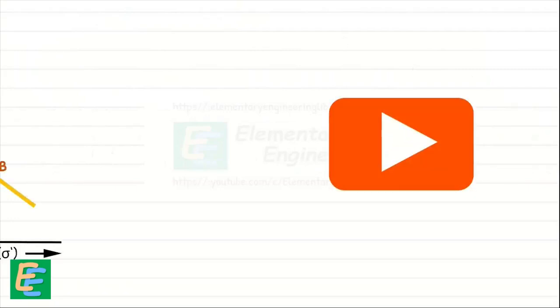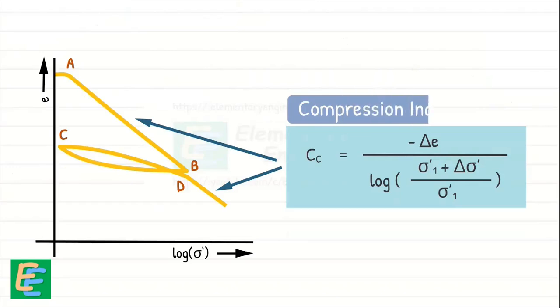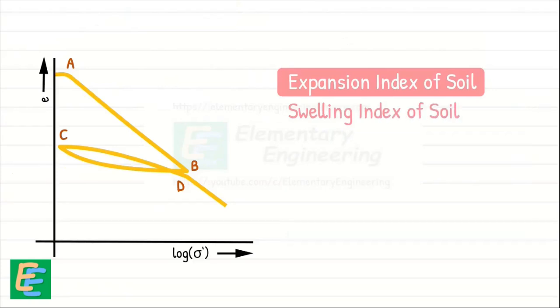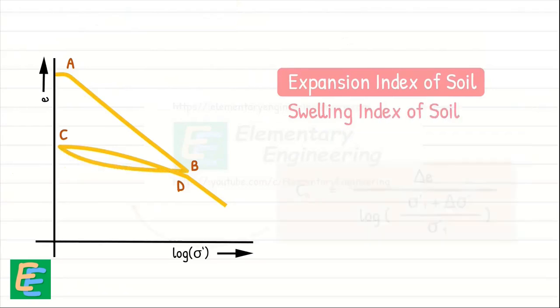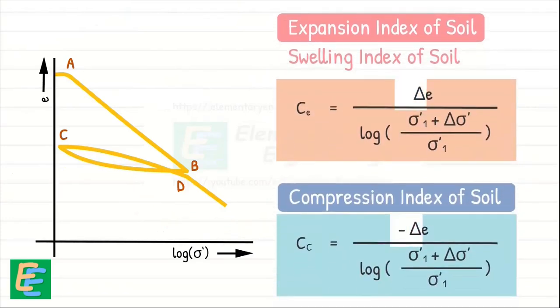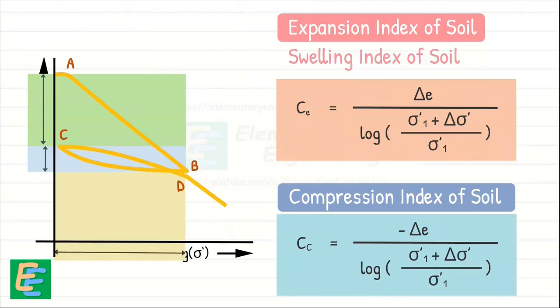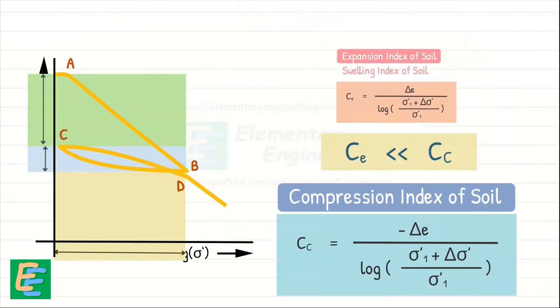In our previous video, we defined the slope of the linear portion of the curve as compression index of soil. Similarly, we can also define a few more coefficients for the unloading and reloading portion of the curve. We can define expansion index or swelling index CE as the slope of the rebound curve. Since we can notice the change in void ratio during swelling is smaller when we compare the change in void ratio during compression for the same load change, it is evident that swelling index is much smaller than compression index. This makes sense as we know that void ratio does not fully recover to its original value during swelling that it experiences during compression under the same amount of pressure.